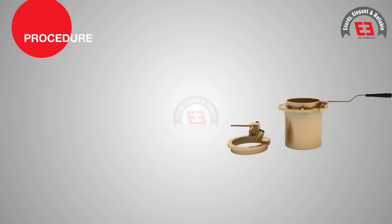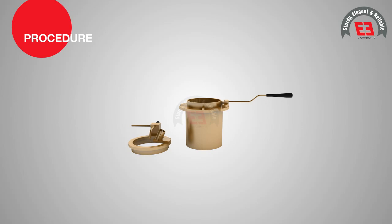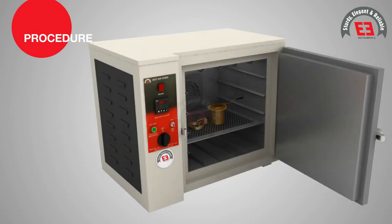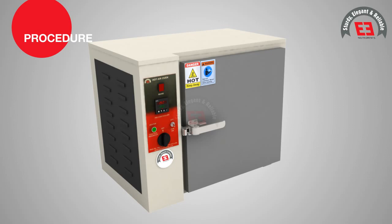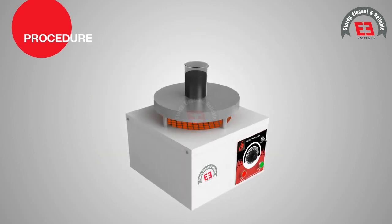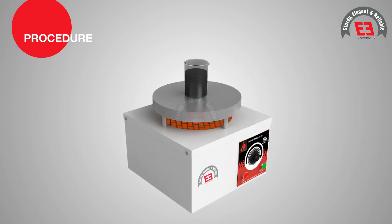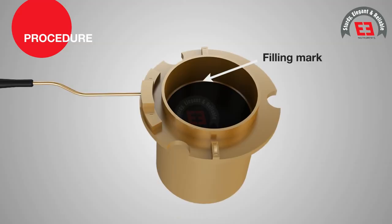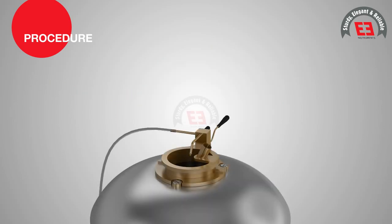All the parts of the open cup tester are cleaned and dried in hot air oven. The fresh bituminous binder is heated above its softening point and filled into the cup up to its filling mark. The clip supporting thermometer and test flame is supported in position on the cup.